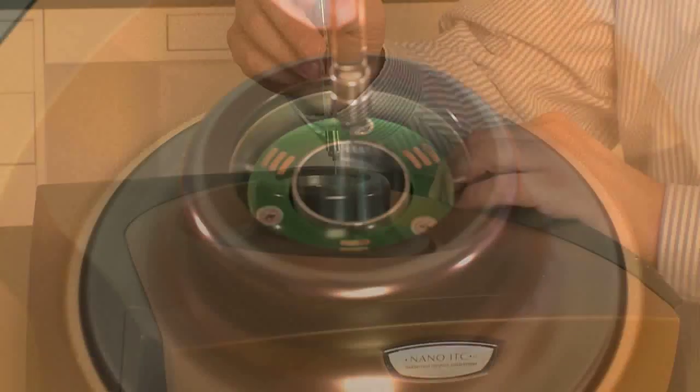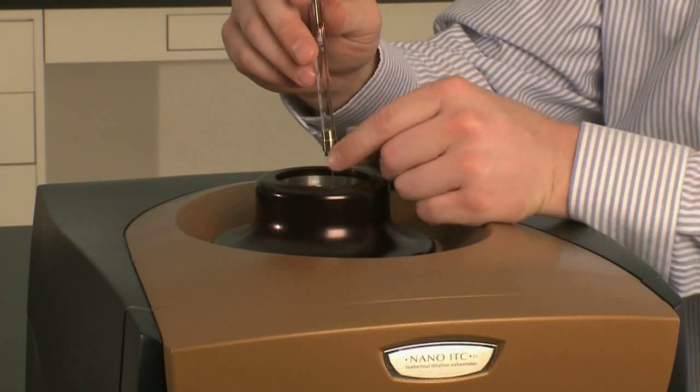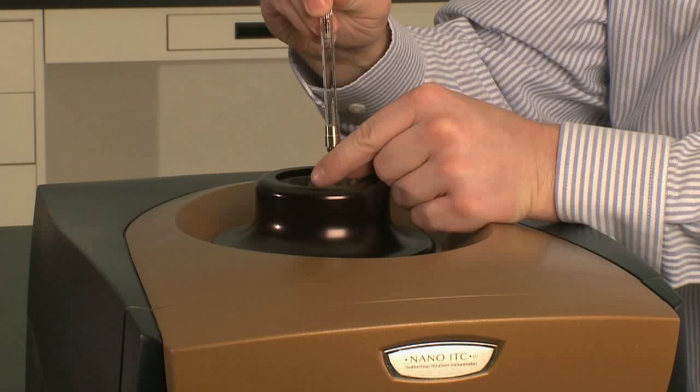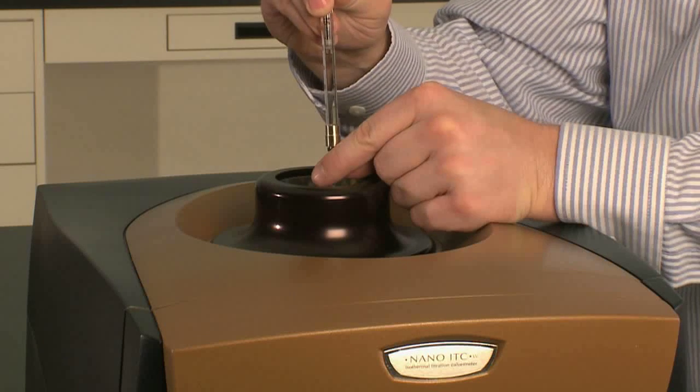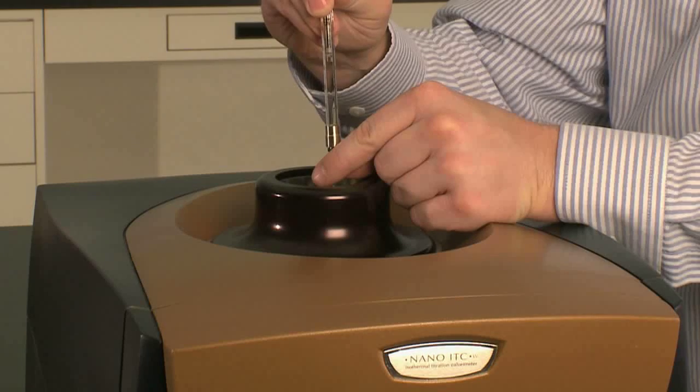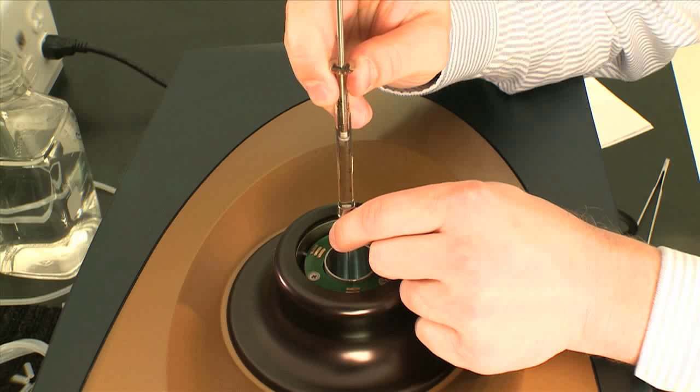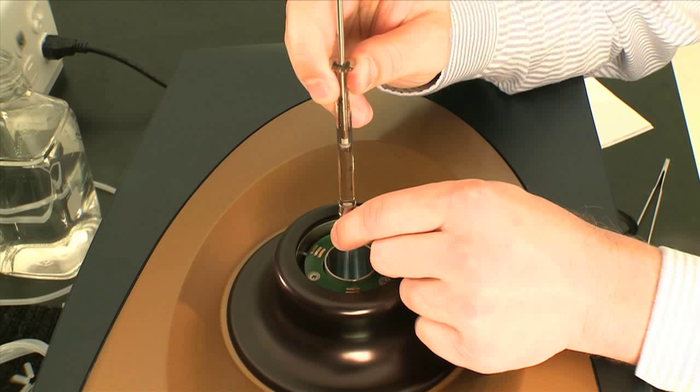I place the needle in the reference side until I just touch the bottom, lift up just slightly, and then slowly inject the water. You want to be careful that you have no bubbles in the syringe, but even if there are bubbles, you just want to make sure that you don't inject them into the cell of the ITC.